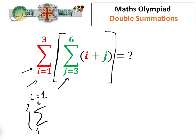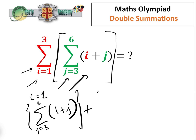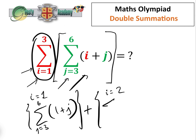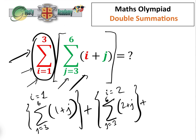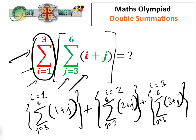This double summation could be rewritten as: for i equals one, we do the sum between j equals three and six of one plus j; when i equals two, we do the sum between j equals three and six of two plus j; and the third iteration when i equals three, we do the sum between j equals three and six of three plus j. That's what the double summation means — we're doing a summation within each of the iterations.